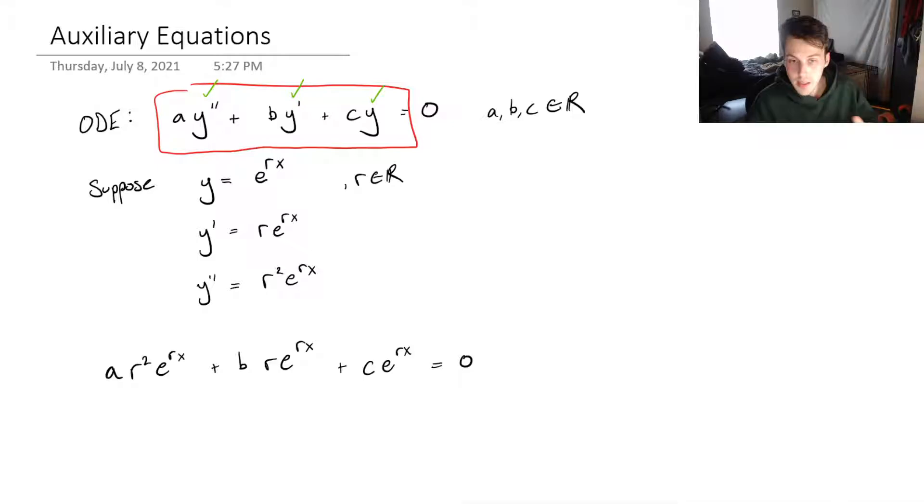Remember, a, b, and c are knowns from our ODE. And then r is what we're trying to find because once we have r, we can plug that back into our solution right here, y equals e to the rx. So that's the general idea of what we're doing here.